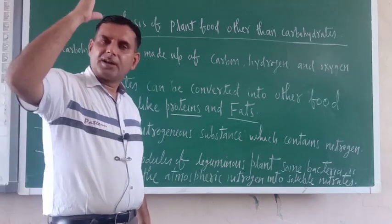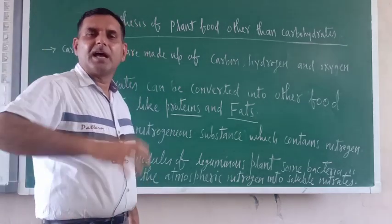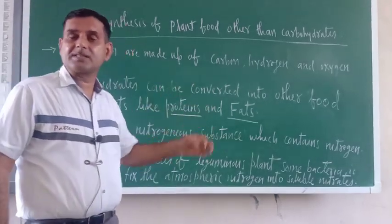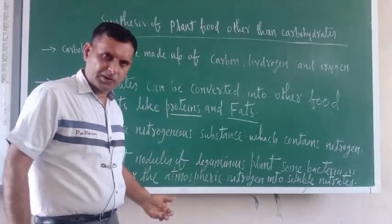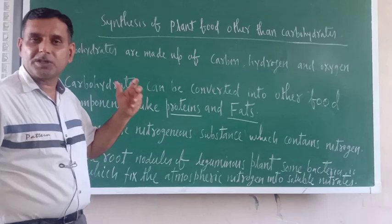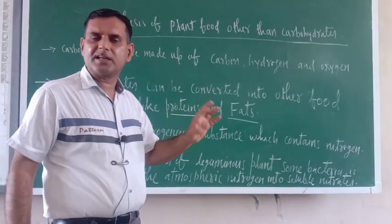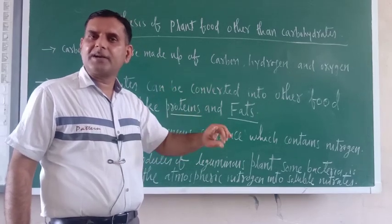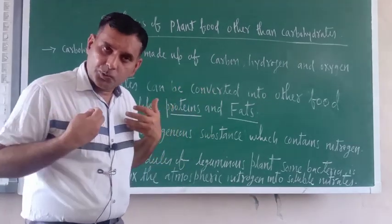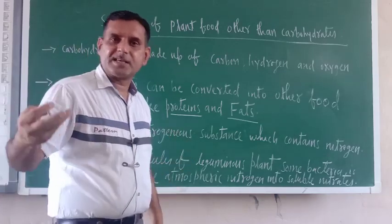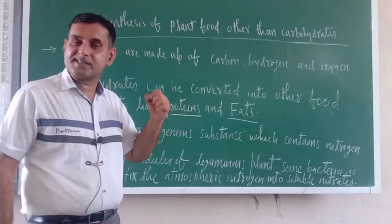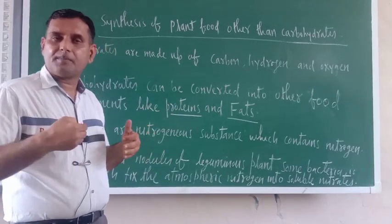Soya bean contains the maximum amount of protein because the bacteria found in the root nodules absorb the nitrogen present in the atmosphere and convert it into protein. These are called nitrogen-fixing bacteria. Leguminous plants means pulse-producing plants. The atmospheric nitrogen is inert and of no use, but when fixed as soluble nitrates it can be converted into proteins. We eat pulses so that our body is rich in protein, which is a structural material essential for body repair.